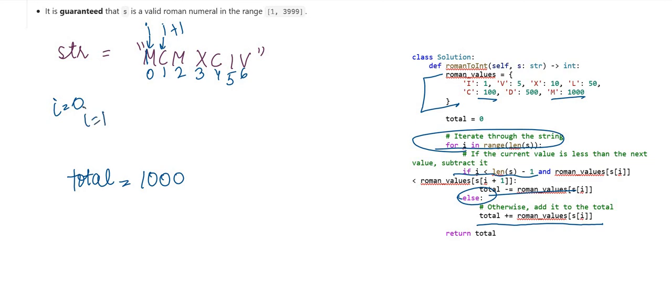Now I value is 1. So now this is I and this M is I plus 1. So value of C is less than value of M because M is 1000, C is 100. So what we are doing is we are subtracting the value of S of I, which means we are subtracting 100. It becomes 900.